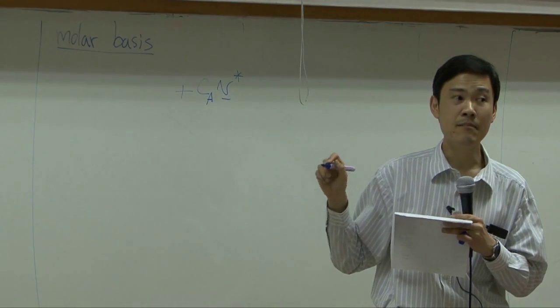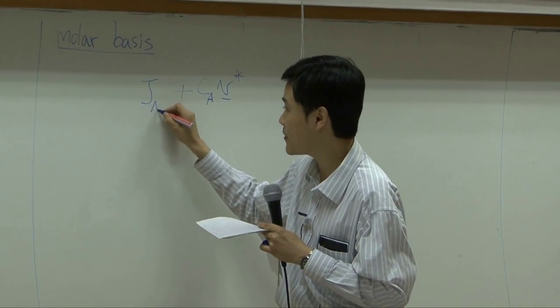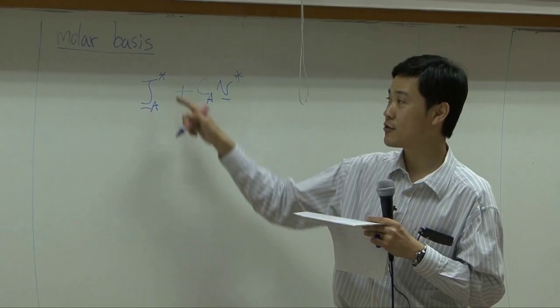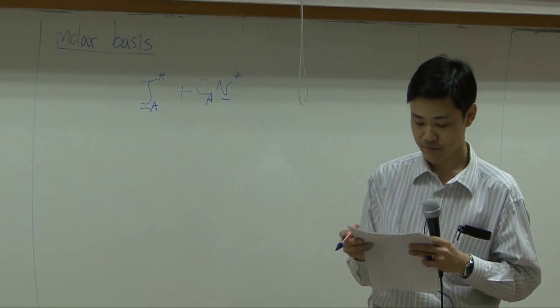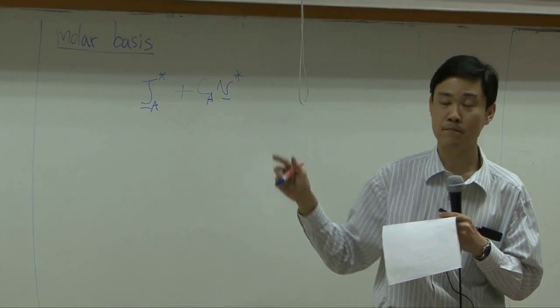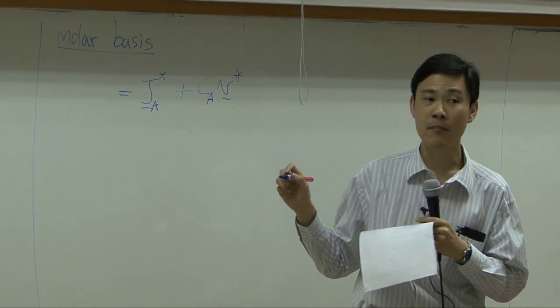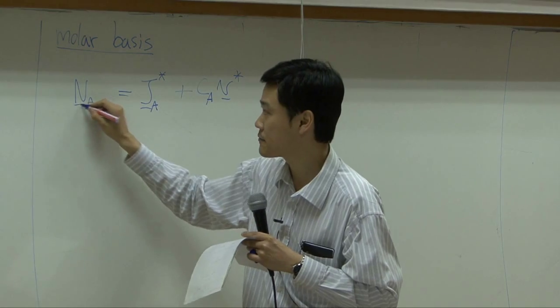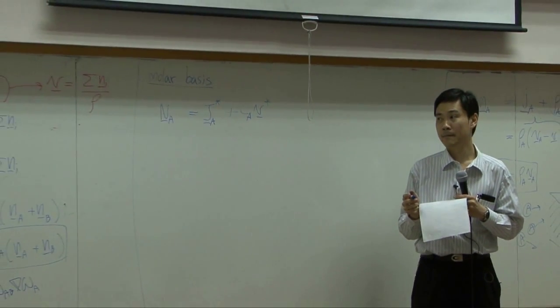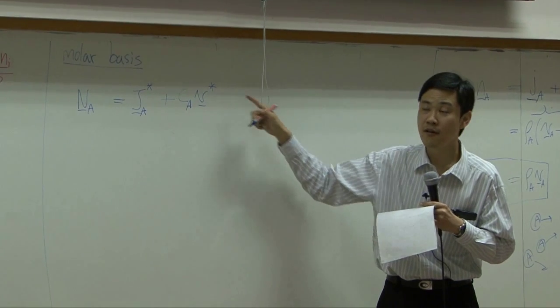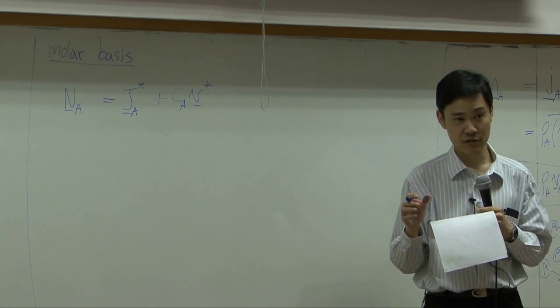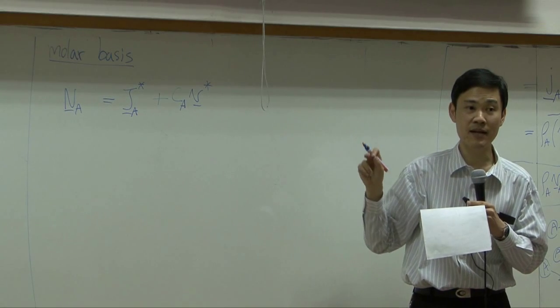For diffusion flux in molar basis, we use capital JA star. Instead of small j, we use capital J, also add star there. The reason we add star will be discussed later, but this is simply just a notation. The combined flux in molar basis, we use capital N. So normally, capital letter will be used for molar basis. Star itself represents how we take the average. Without star, average will be taken based on mass fraction. With the star, average will be taken based on mole fraction.